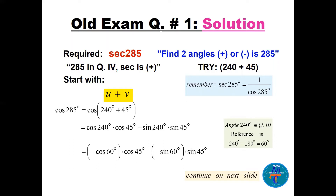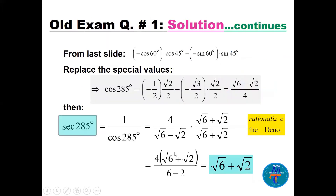Cosine 45 is a special angle in quadrant one. For 240, which is in quadrant three, the reference angle is 240 minus 180 = 60. So cosine(240) equals negative cosine(60) — negative because cosine is negative in quadrant three. Similarly, sine(240) is negative sine(60), giving us two negatives, so minus cosine(60).